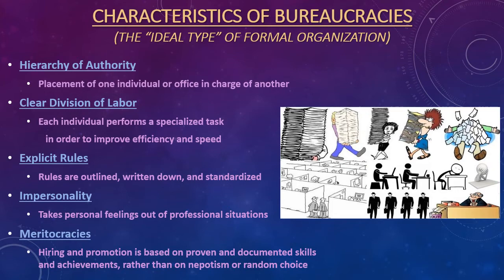The third characteristic of bureaucracies is explicit rules. Rules are outlined, written down, and standardized. When you start a new job, they usually give you an employee handbook to read over and sign to acknowledge you've read it — the same handbook given to all employees, or all employees with a specific role. It is standardized; they're not writing a specific handbook just for each individual hired.